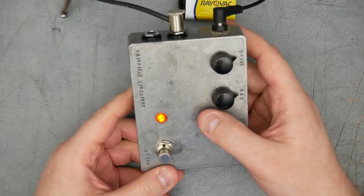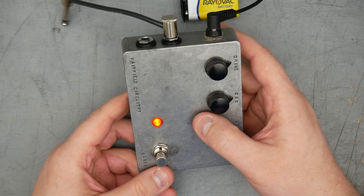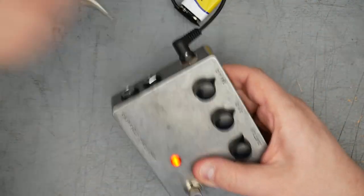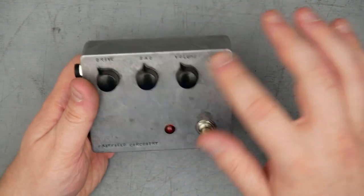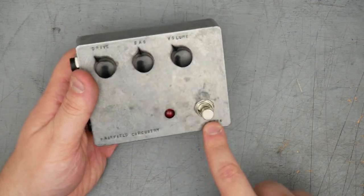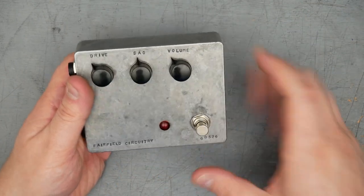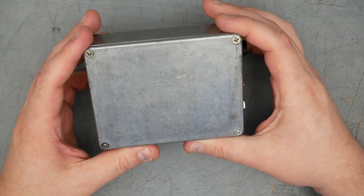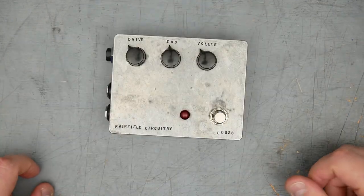It's sort of a dark orange getting on like red orange color. Controls are marked drive, sag, volume. Fairfield circuitry down here. And this one is OD 526, so presumably the 526th made. So those are the externals. Let's go ahead and crack open the pedal.